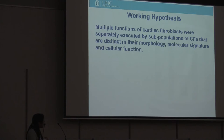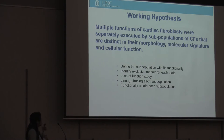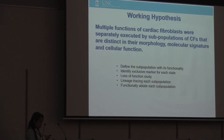The third state has the most enriched terms in immune response. This gives us a very exciting hypothesis: we know cardiac fibroblasts execute all those functions, but we don't know how they do so through what kind of molecular pathway. So now we propose that the multiple functions of cardiac fibroblasts may be separately executed by different sub-populations that are distinct in their morphology, molecular signature, and cellular function. There is a lot to be done to prove or disprove this hypothesis — we need to find exclusive markers for each state and sub-population, and follow up with functional studies.